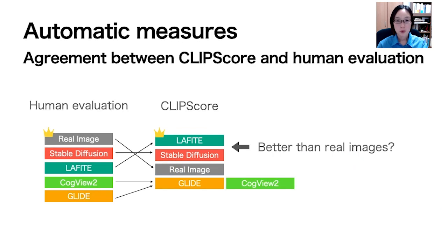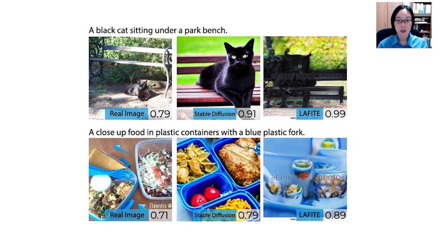We also investigated CLIP score, a recently proposed automatic measure for assessing how well text and images match. Interestingly, Rafit and Stable Diffusion achieve higher scores than authentic image and caption pairs from COCO captions. However, human data still rates the real images as having the best alignment. Looking at examples of image and caption pairs with their respective CLIP scores, a higher CLIP score does not necessarily mean better alignment. Our experiment suggests that CLIP score has reached a saturation point and may no longer be a reliable tool for evaluating state-of-the-art generative models.